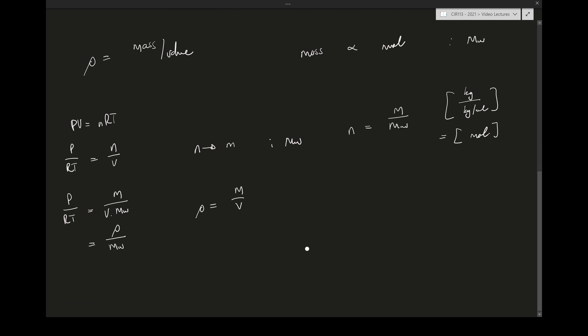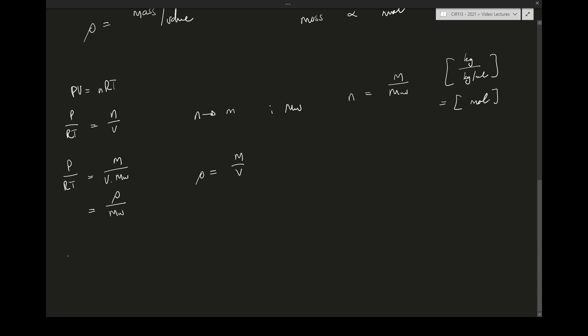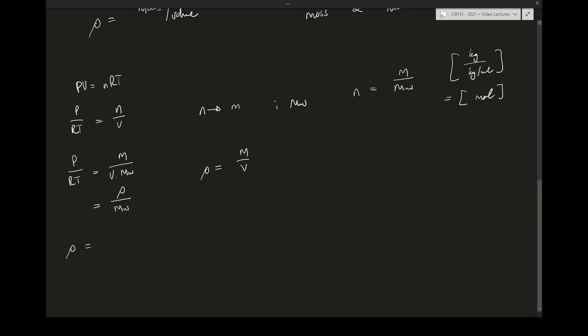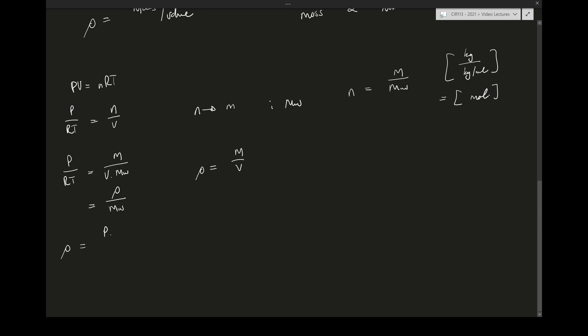Which means we can rewrite the equation and say we can calculate the density of a gas by taking the pressure in the system, multiplying by the molecular mass of the gas in the system, divided by the gas constant and divided by the temperature. As easy as that.